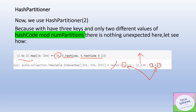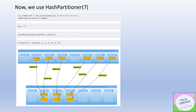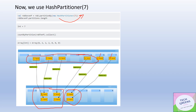If we apply hash partitioning with seven partitions, the same algorithm is applied. Keys one and two go to partition zero, while key three goes to a separate partition. When we count elements per partition, we see three partitions were actually created, with two elements on the first partition, two on the second, and two on the third.